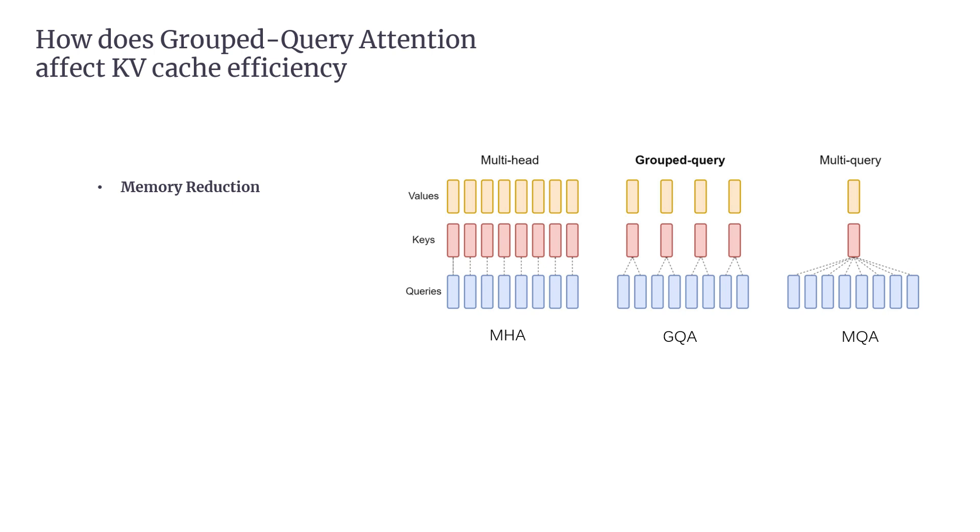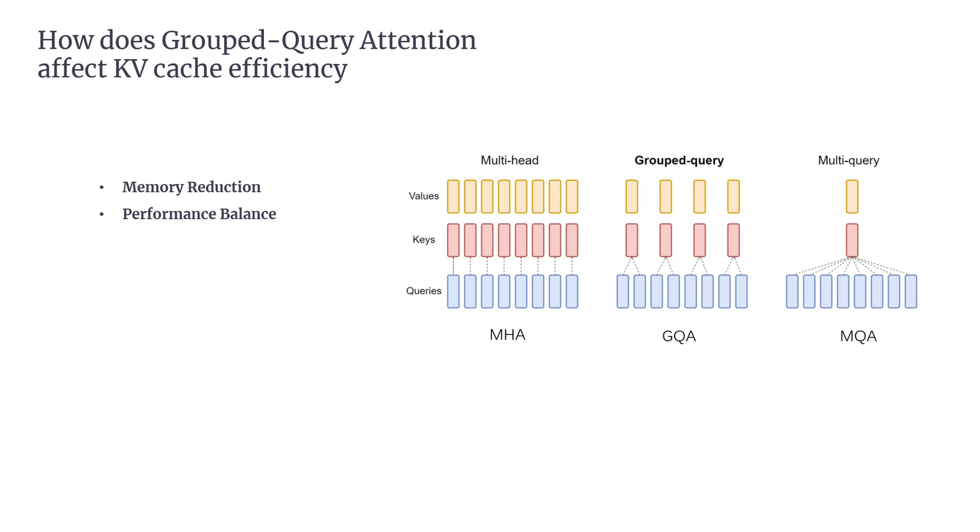The second, Performance Balance. GQA strikes a balance between efficiency and model quality. In multi-query attention (MQA), a single key value head is used for all queries, which maximizes efficiency but can sometimes degrade performance because the model may lose some attention detail. Grouped Query Attention, on the other hand, offers a middle ground. It provides efficiency similar to MQA while maintaining performance close to that of standard multi-head attention. This makes GQA a great option for achieving high efficiency without a significant loss in the quality of generated text.